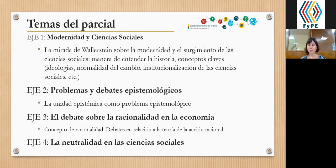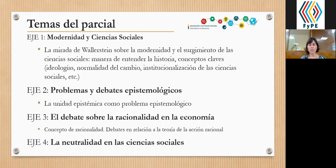Y en el eje 4, lo que entra en el parcial es el eje completo. De todos modos es un eje bastante corto, donde lo que trabajamos es la neutralidad en las ciencias sociales, que refiere al segundo problema epistemológico. Esto lo estuvimos viendo la semana pasada.